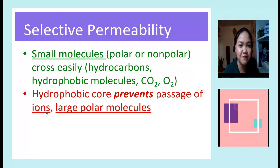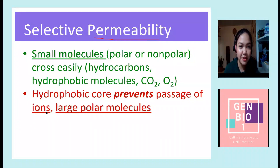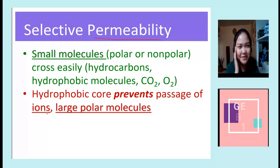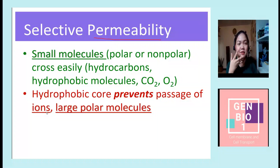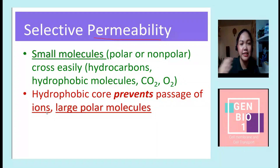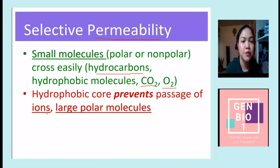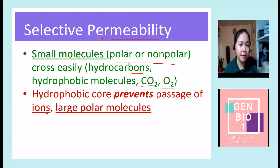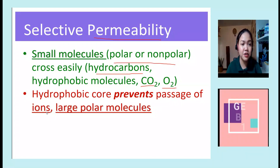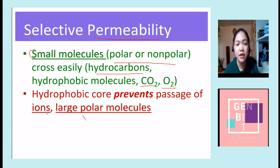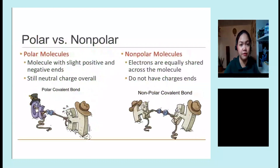Now let's go to selective permeability. Cell membranes are selective — only small molecules are able to cross easily, especially hydrocarbons, CO2, O2, and H2O, whether polar or non-polar. The hydrophobic core prevents passage of ions and large polar molecules, which is why it's selective. Only small molecules can pass freely; larger ones need the help of other proteins or energy to be transported in and out of the cell.